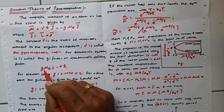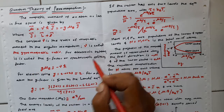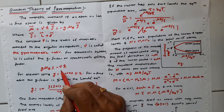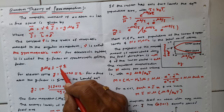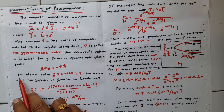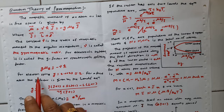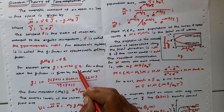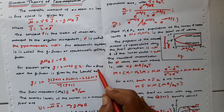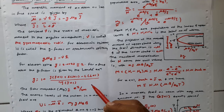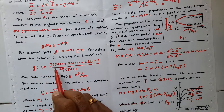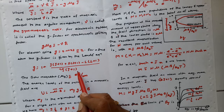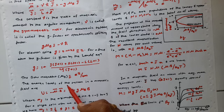For the electronic system, g is called the spectroscopic splitting factor or Landé factor. For electron spin, its numerical value is 2.0023, approximately considered as 2. For a free atom, the g factor is given by the Landé equation: g = 1 + [J(J+1) + S(S+1) − L(L+1)] / [2J(J+1)].